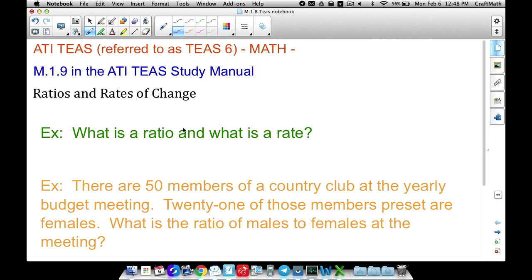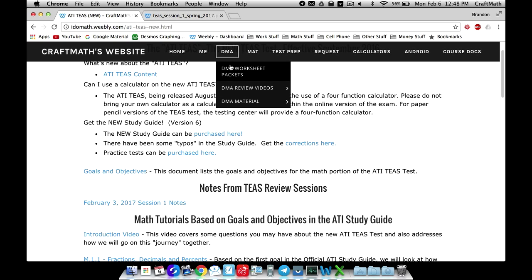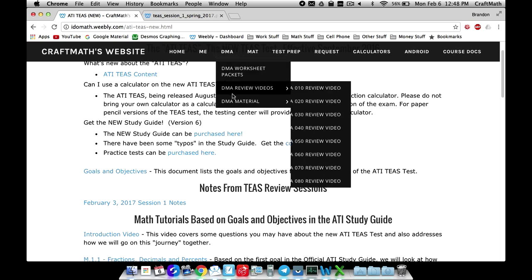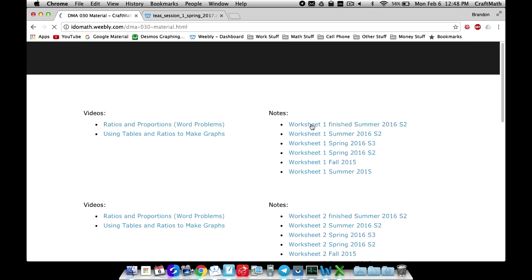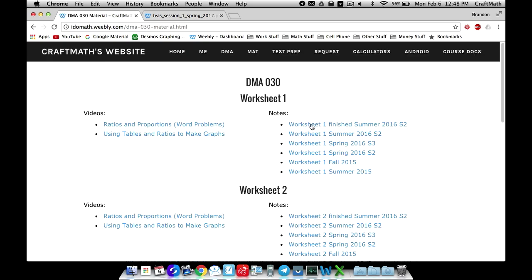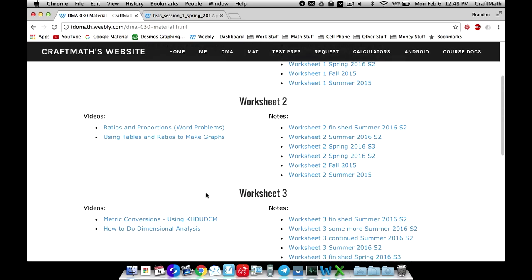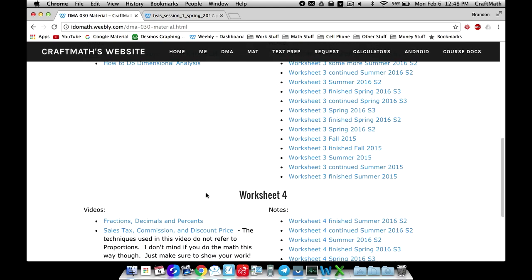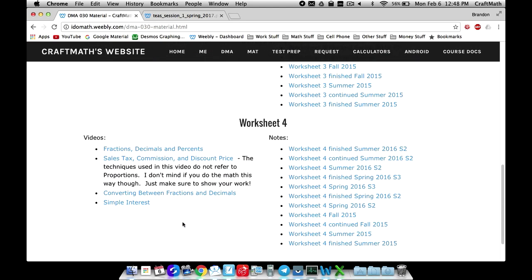So just another resource there too and also one more thing to talk about as well since we're talking about ratios and rates in this video, if you go over to DMA over at my website and go to DMA material and DMA 30 material. DMA 30 is a developmental math course that covers ratios and rates and stuff like that so if you feel like you need some extra practice feel free to come over here to this site, plenty of notes and a couple of videos there as well.